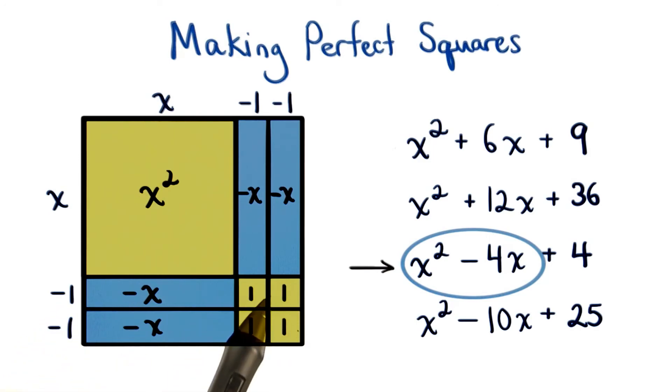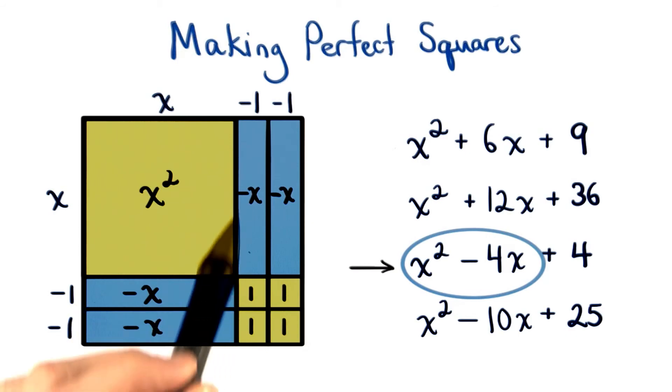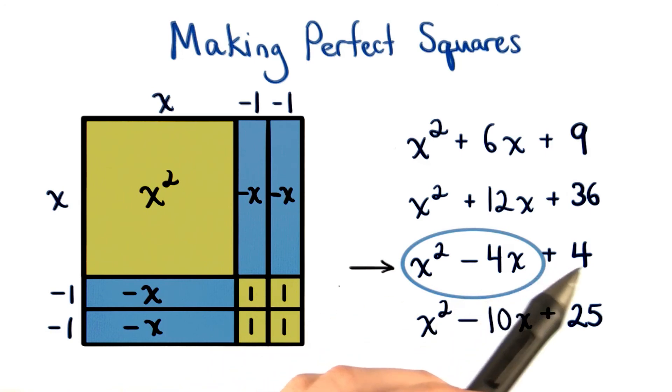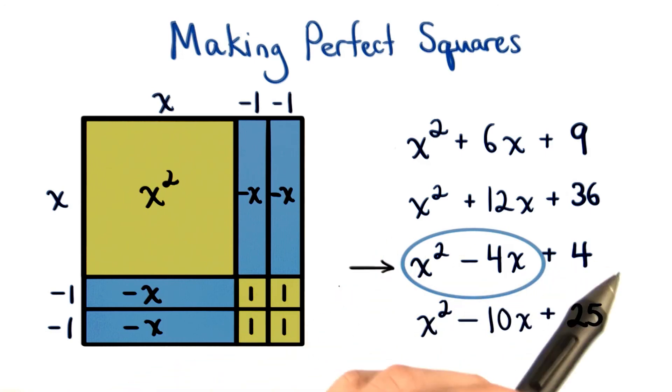And finally, for these four one pieces, we have a side length of negative 1 here, and a side length of negative 1 here. So negative 1 times negative 1 would equal a positive 1. We have this positive 1 four times, so we know we have to add four one tiles to complete our square.